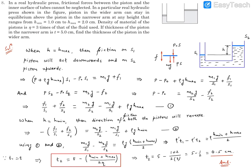G cancels out. The mass of each piston can be written as density of piston (ρ') times volume, and volume is cross-sectional area times thickness. The cross-sectional area cancels, leaving thickness. So the equation becomes: ρ'T1 − ρ'T2 = ρ(H_min + H_max)/2. Dividing by ρ': T1 − T2 = (ρ/ρ') × (H_min + H_max)/2. Since the density of the piston is eta times that of the fluid, ρ'/ρ = η, so T1 − T2 = (H_min + H_max)/(2η).